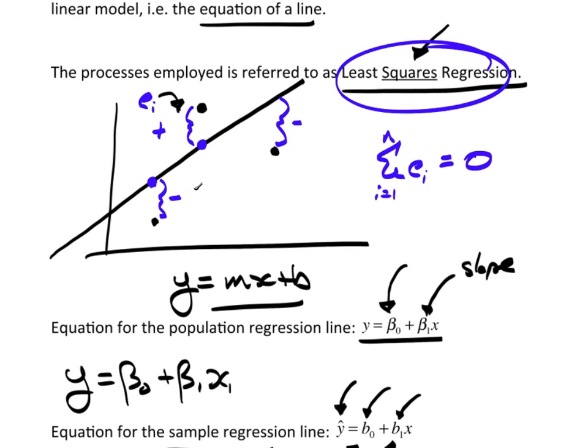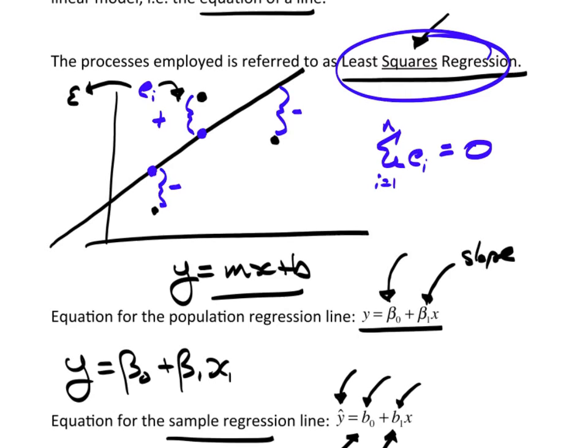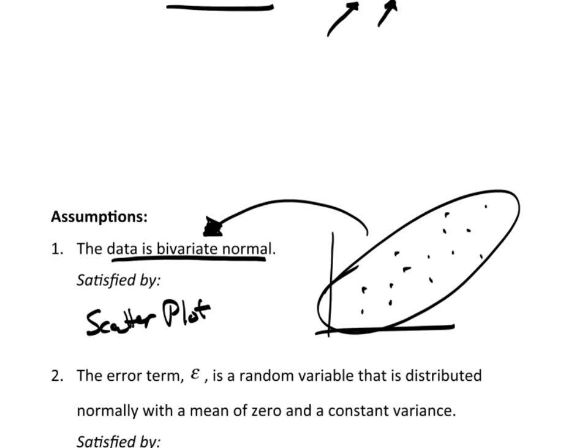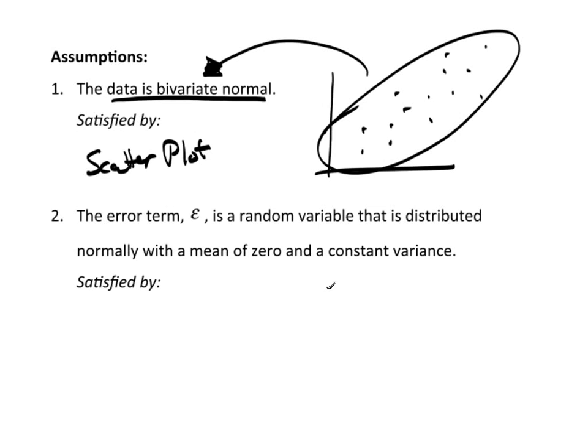If it's a population data, if we did the population, then we're going to use epsilon to represent the error term. So, e's estimate the epsilons. Just like x bar estimates mu, r estimates rho, and so forth, et cetera.